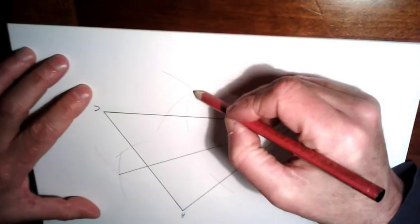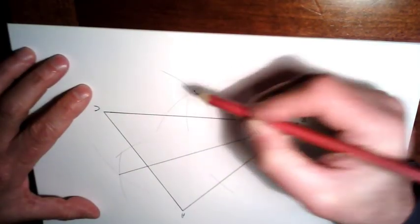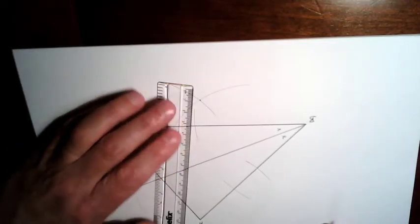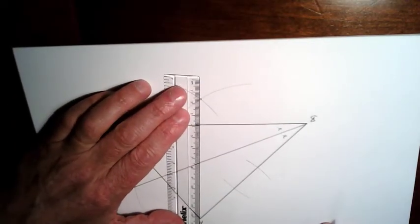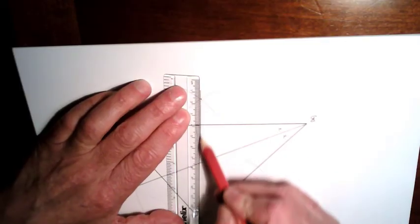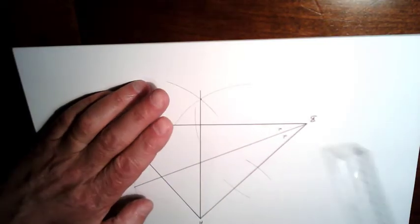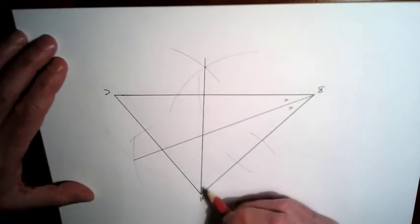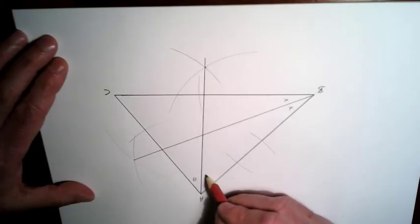And what we're going to do is just take this point here where the two arcs intersect and join that up to A. So I'm going to just draw a line down here to A. Now what you should find here is that that angle and that angle there are both the same.